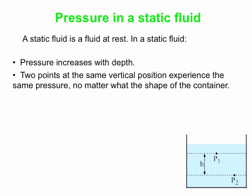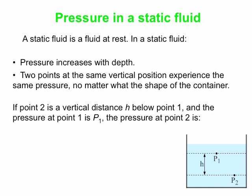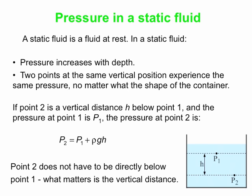Here's an example of a container with two points marked: point one and point two. Point two happens to be a vertical distance h below point one — not directly underneath, but that doesn't really matter. All the dashed lines at the same level as point one have the same pressure as point one, and all those at the same level as point two have the same pressure as point two. The pressure at point two is higher because it's lower in the fluid. In general, the pressure at point two equals the pressure at point one plus the density of the fluid times g times h, where h is the vertical distance that point two is below point one. Any horizontal displacement is irrelevant — it doesn't change the pressure at all in a static fluid.